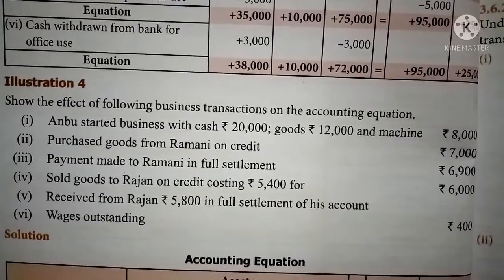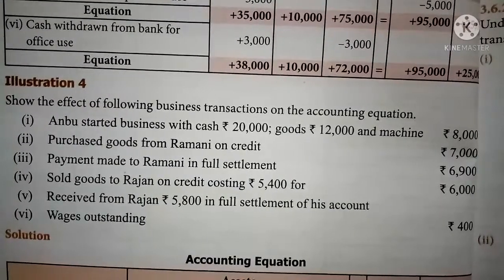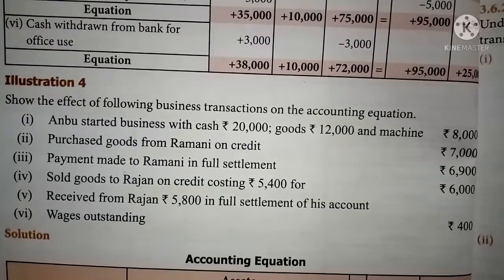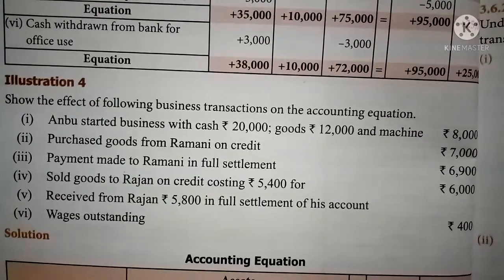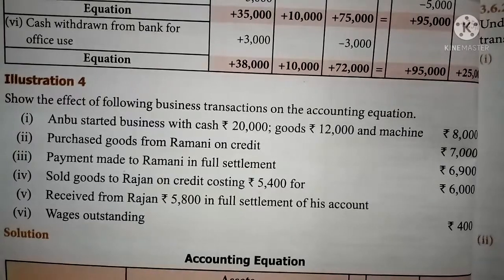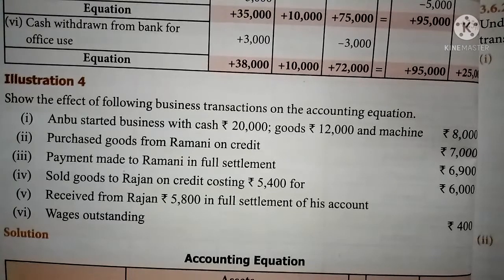Good morning students. Today we discuss 11th accountancy in this morning video. We continue the same chapter, Books of Primary Entry. In this chapter we already discussed how to prepare the accounting equation. Based upon the given transactions, you should find out the respective columns and then solve the problem. In this video we discuss one more example — Illustration 4, page number 38 in your textbook.